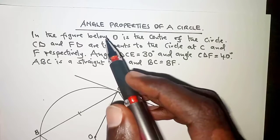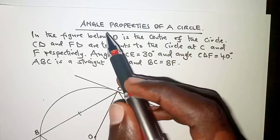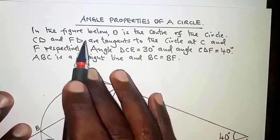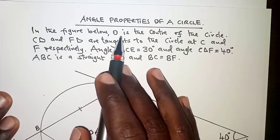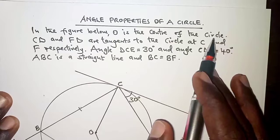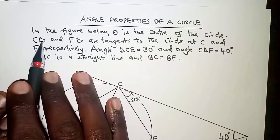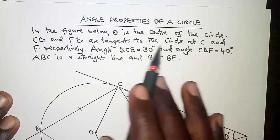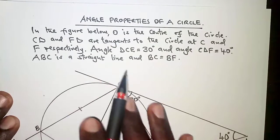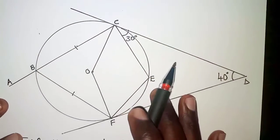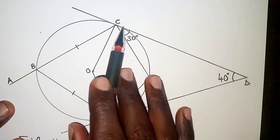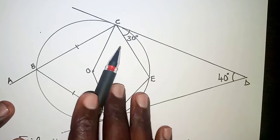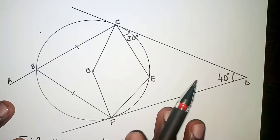Hi, let's learn something about angle properties of a circle. The question we have here reads: in the figure below, O is the center of the circle. CD and FD are tangents to the circle at C and F respectively. So we have CD and FD tangent to the circle at C and F respectively.